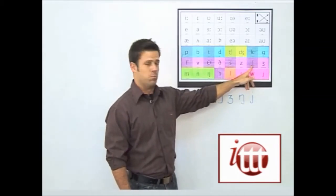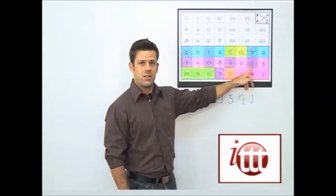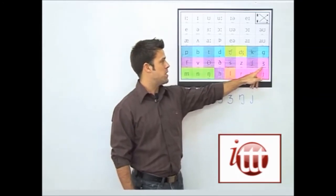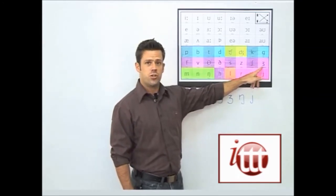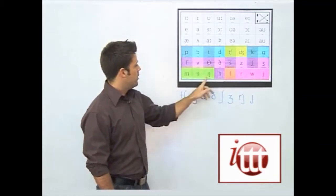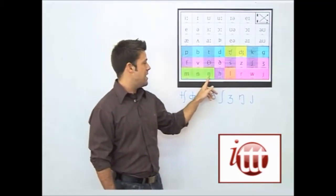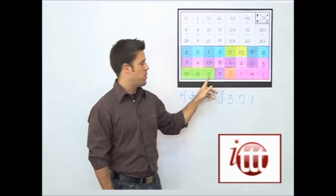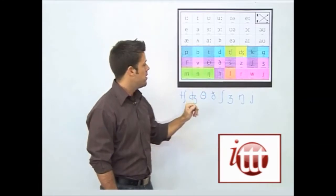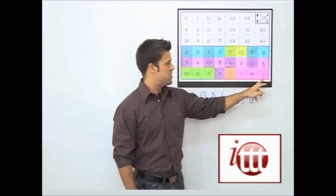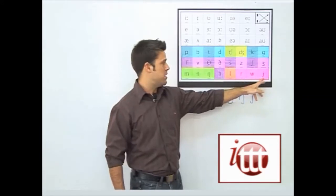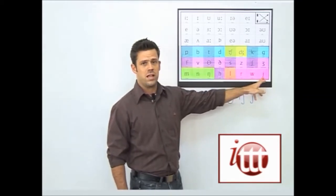Moving over, we have a symbol which represents the SH sound, and another symbol which represents the ZH sound as in measure. Here we have the NG symbol, which represents the NG sound as in song. And lastly, we have a symbol which looks like it would represent the J sound, but it doesn't — it represents the Y sound.